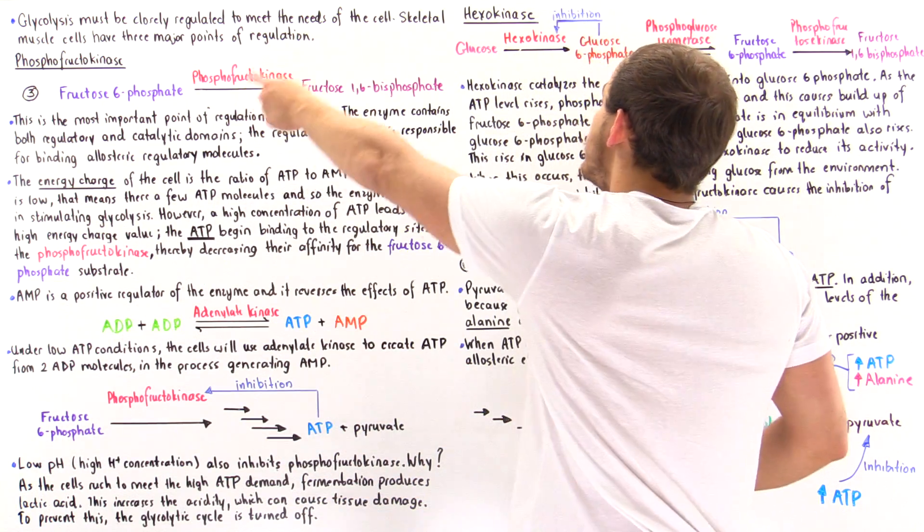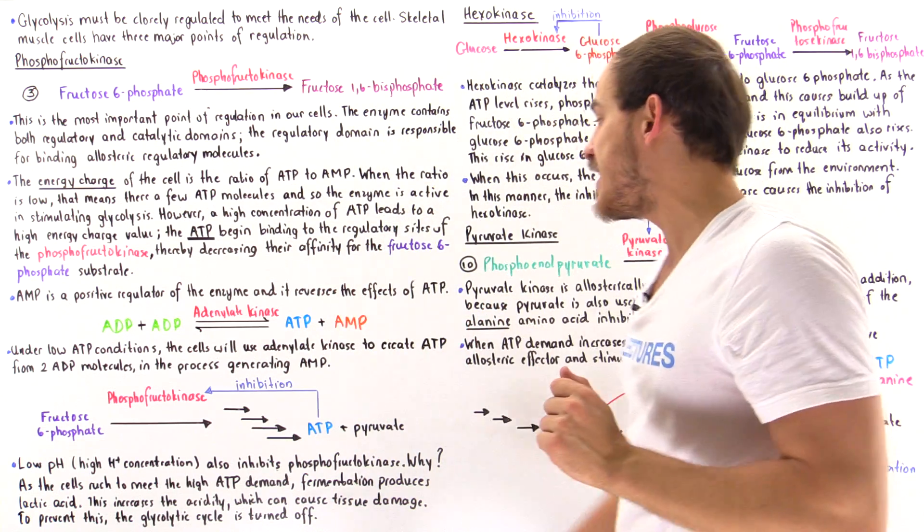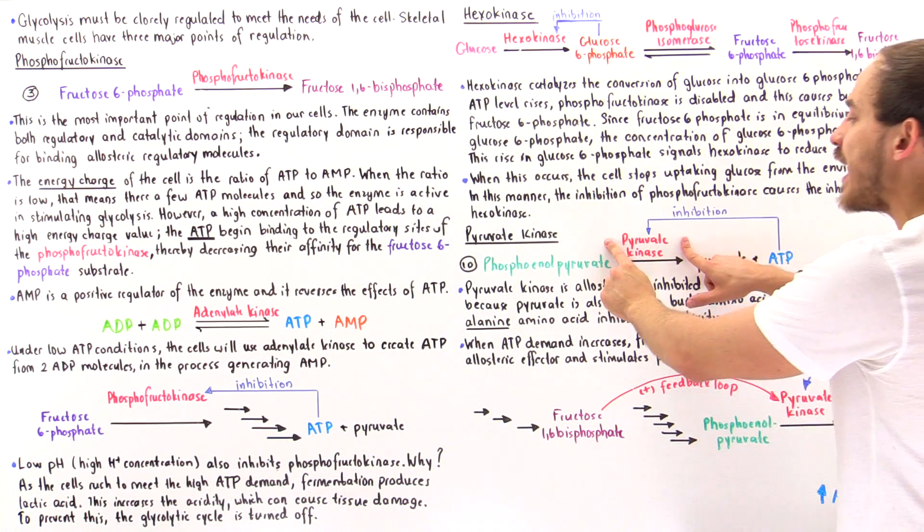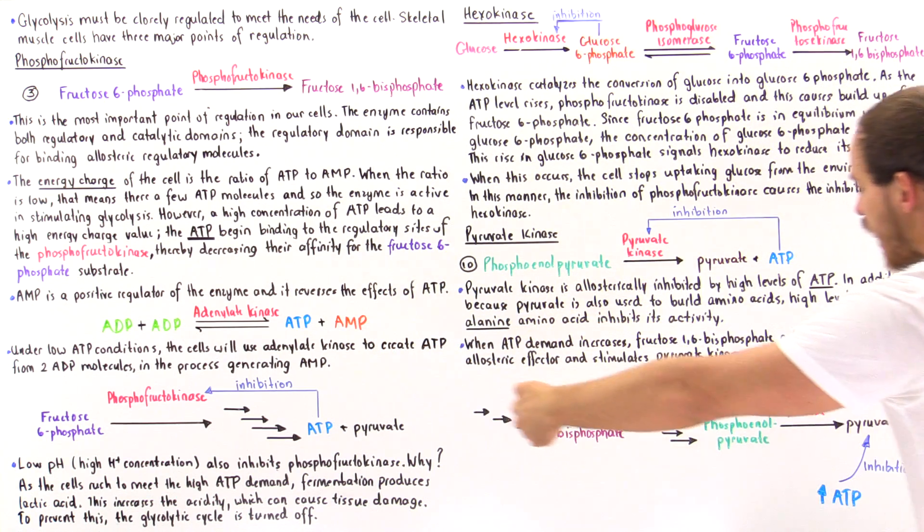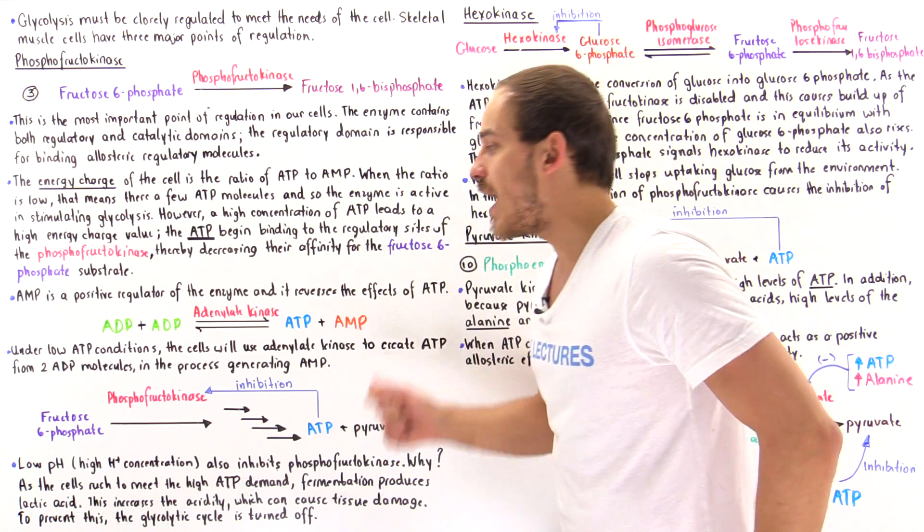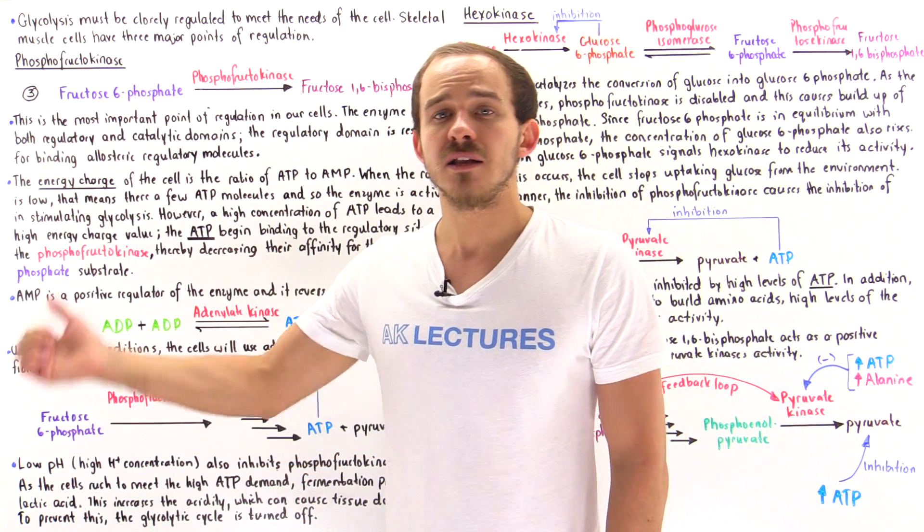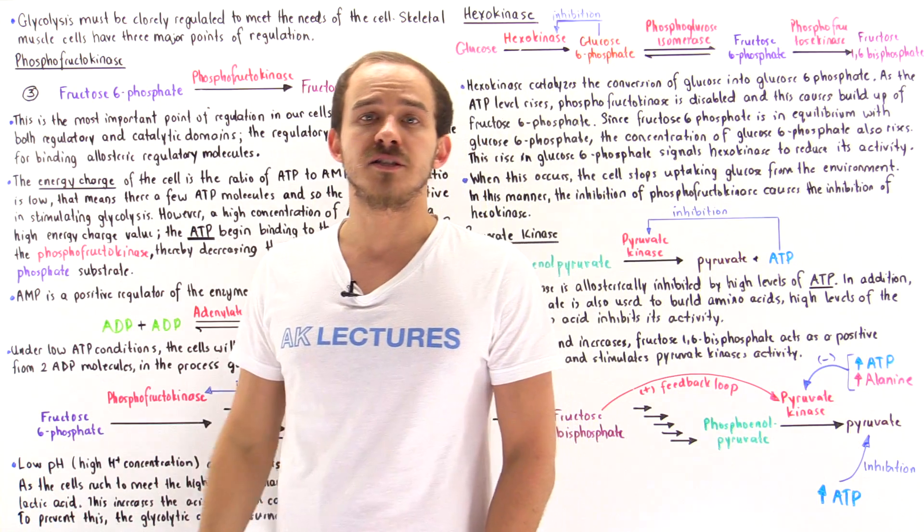This will produce many more fructose 1,6-bisphosphate molecules, which will create a positive feedback loop with pyruvate kinase. And so that will essentially cause the production of many more ATP molecules. And that will help meet the need of the contracting skeletal muscle tissue.